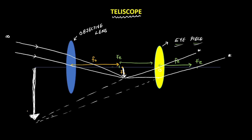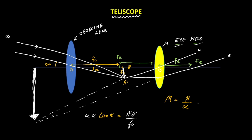Let us find the magnification of this final image. Magnification equals beta divided by alpha, where beta is the visual angle of the final image and alpha is the visual angle of the object. In triangle O A'B', tan alpha equals perpendicular divided by base, which equals A'B' divided by fo. Since alpha is a very small angle, tan alpha is approximately equal to alpha itself, so alpha can be written as A'B' divided by fo.